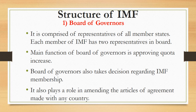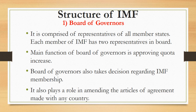Now we will see the structure of IMF. First is the Board of Governors, which is comprised of representatives of all member states. Each member of IMF has two representatives. Currently there are 189 members of IMF, and every state appoints two board of governors. The Board of Governors meets every year. There is a specific quota for every state in IMF, set according to the value of each country in the global market. According to this quota, each member state is bound to pay a specific amount to IMF, and this pooled money is utilized when a poor country seeks a loan.